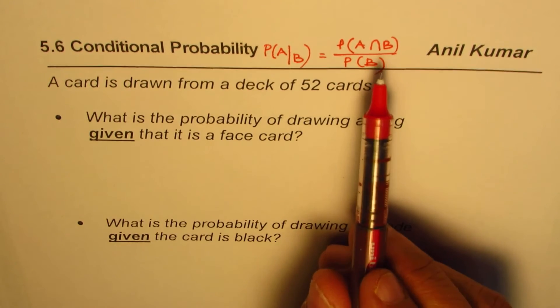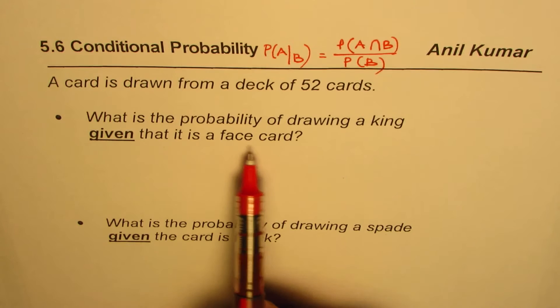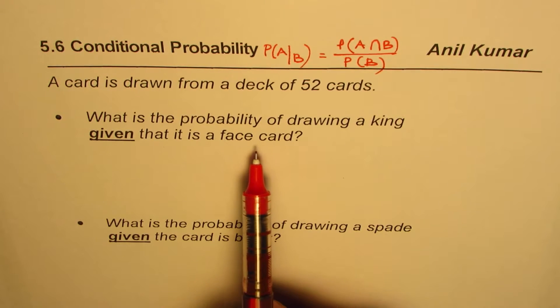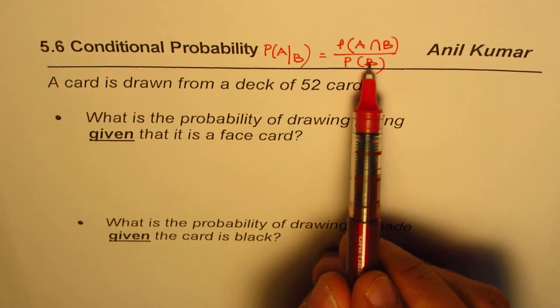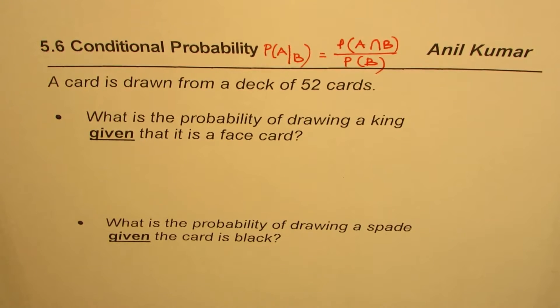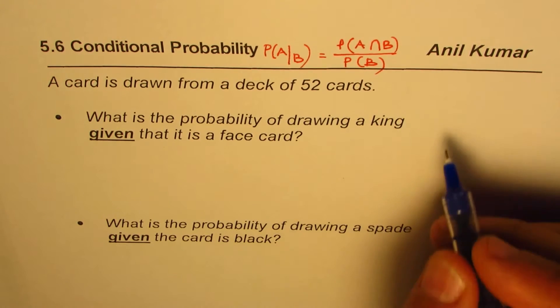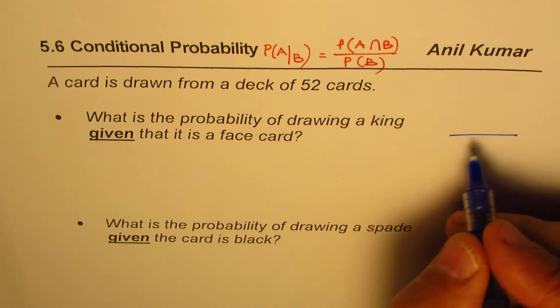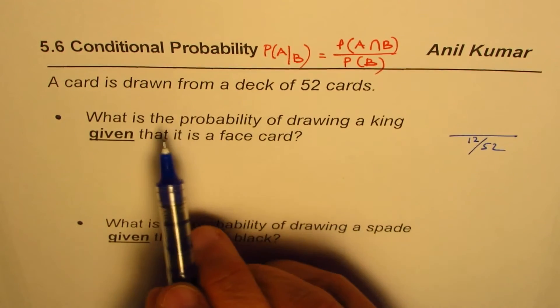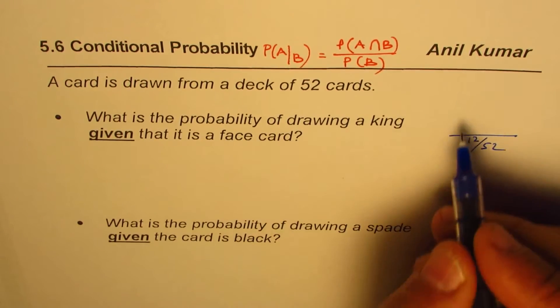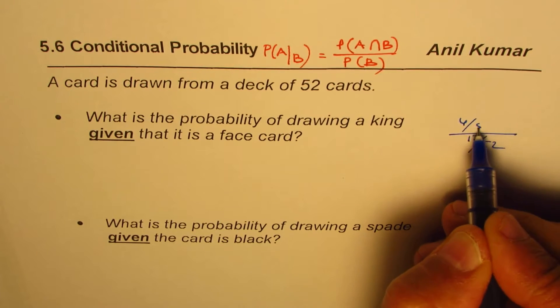So when you use the formula, how many face cards are there? Well, king, queen, and jack - 3 times 4 - 12 face cards out of 52. So the probability will be... let me write that down for you. So we get 12 face cards out of 52. That is the probability of drawing a face card. And what is the probability of drawing a king? There are four kings out of 52.